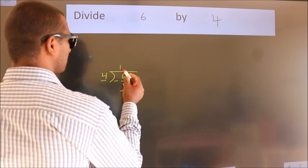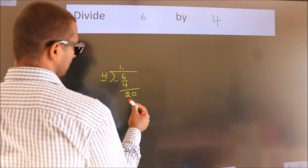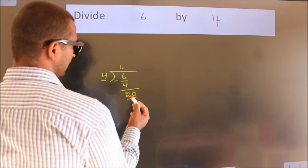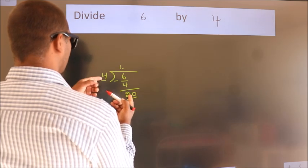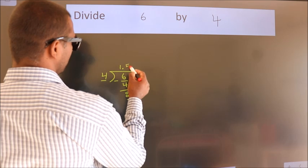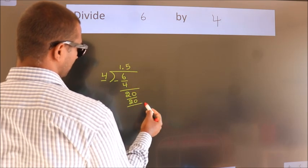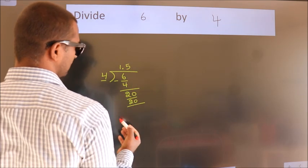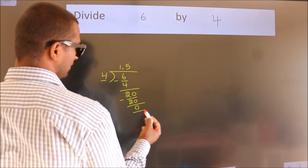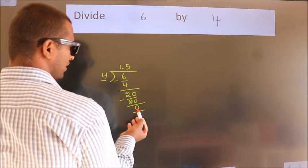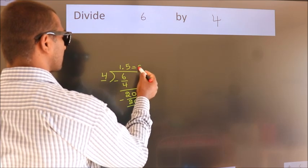So what we do is we put a dot and take 0. So 20. When do we get 20 in the 4 table? 4 fives are 20. Now we subtract, we get 0. We got remainder 0. So this is our quotient.